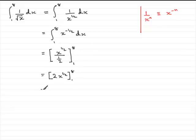Now, we put the limits in starting with 8. So we have 2 times 8 to the power half. That's the square root of 8, in other words. And then we minus what we get when we put the 1 through. So we get minus 2 times the square root of 1.